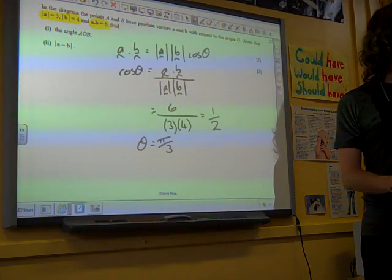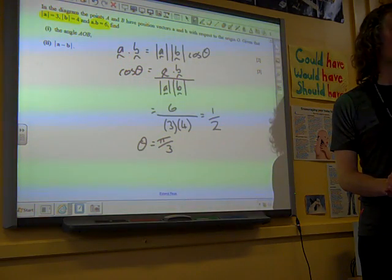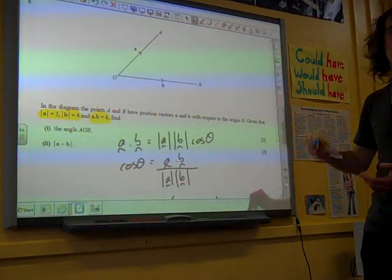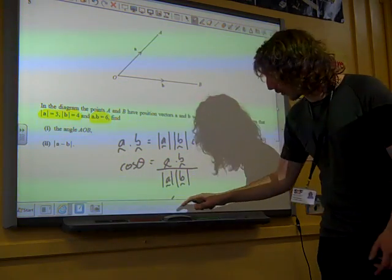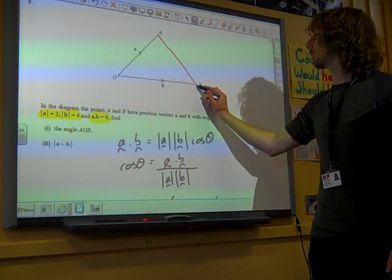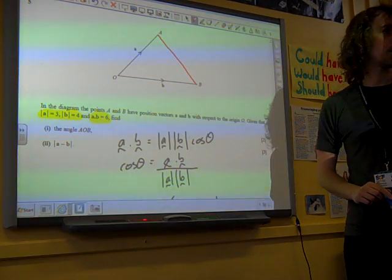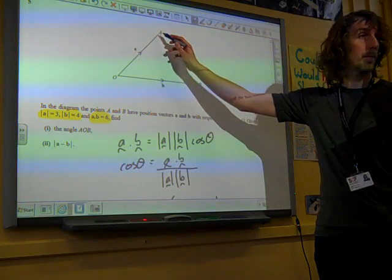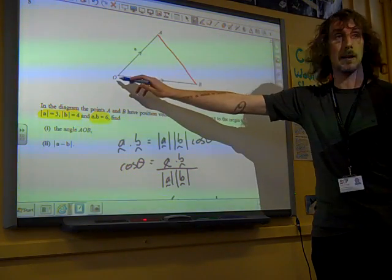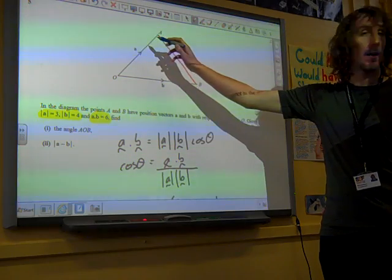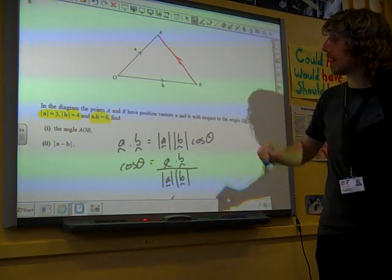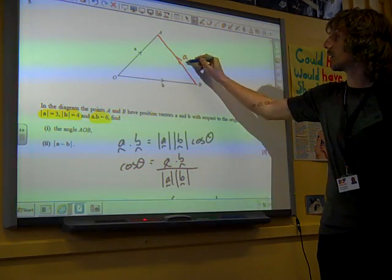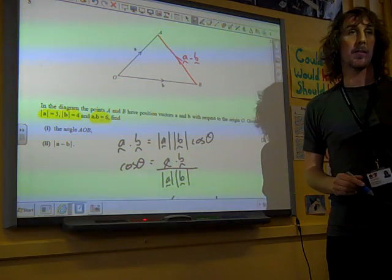Now, it wants to know the length of a minus b. Well we've just talked about the fact that if we go back to our diagram, the line that joins the ends of these two points, that line there. Well to get from b to a, you would go minus b plus a, so that vector there, from b to a, is the vector a minus b.